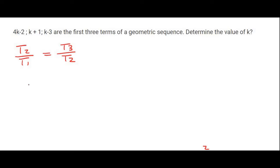Now what you do is you just fill things in. So t2 is k plus 1 over 4k minus 2 equals to k minus 3 over k plus 1.